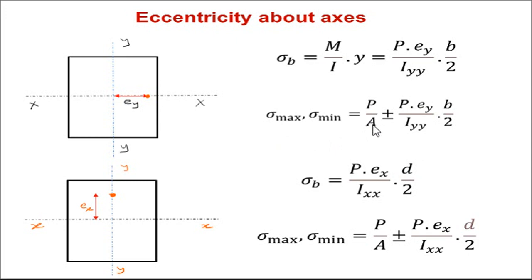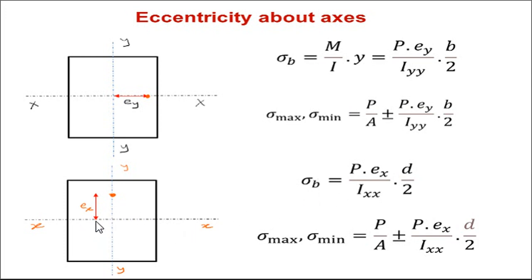The compressive load divided by cross-sectional area, plus or minus bending stress: P into ey divided by Iyy into b by 2. If you take the plus sign you get the maximum stress sigma maximum, and if you take the minus sign you get the minimum stress sigma minimum. Similarly, for the second figure the bending stress about the xx axis is determined — the only change is the moment of inertia is taken about xx and the extreme fiber distance is half the depth, d by 2. So sigma b equals P into ex divided by Ixx into d by 2.